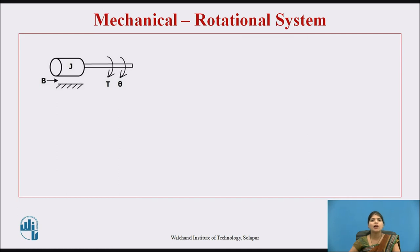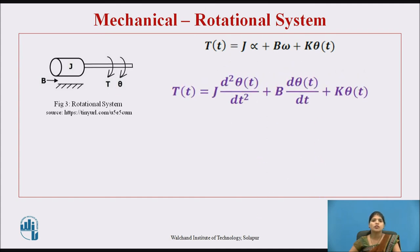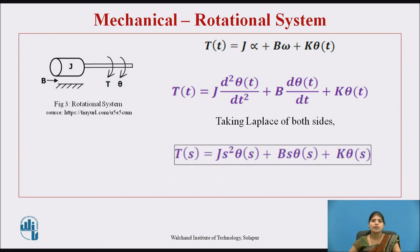Now let us look at the mechanical rotational system. This involves motion about a fixed axis, where force is replaced by torque. According to Newton's law of motion for rotational systems: T(t) = J·α + B·ω + K·θ(t), which expands to T(t) = J·d²θ/dt² + B·dθ/dt + K·θ(t). Taking the Laplace transform: T(s) = Js²θ(s) + Bsθ(s) + Kθ(s). This is the equilibrium equation of the rotational system.